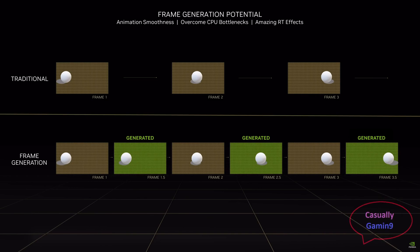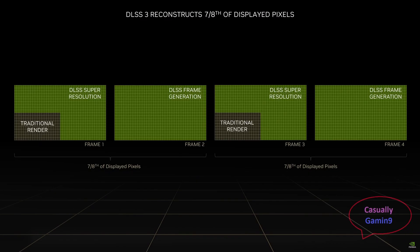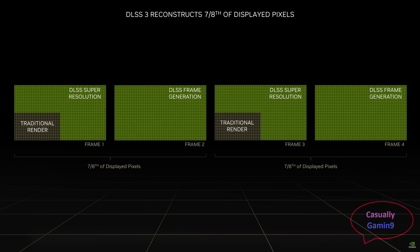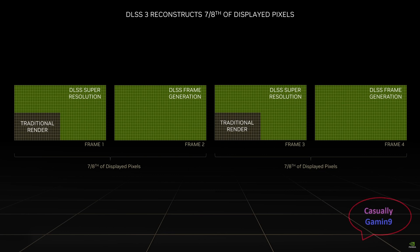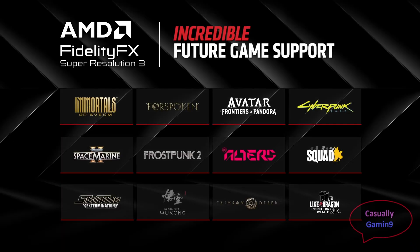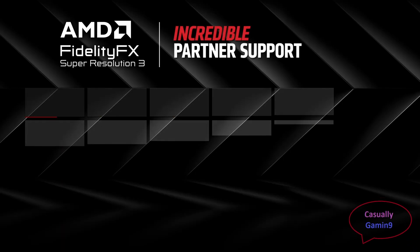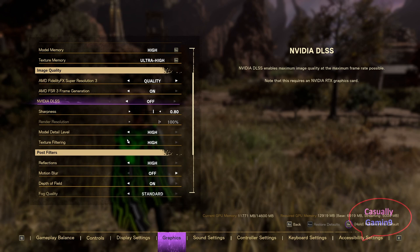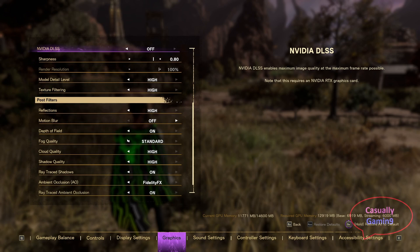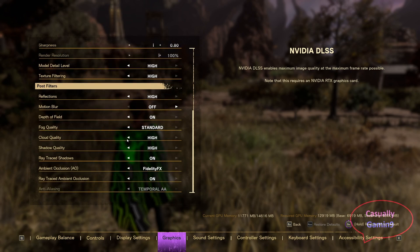But what does frame gen do? Frame generation is the technique that creates frames at the desired output resolution, thus reducing CPU bottlenecks but increasing the overall latency. NVIDIA's solution is available in more games, as AMD just released it with the promise to be integrated in more titles than the two at the time of its release.